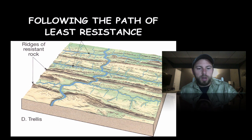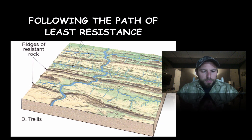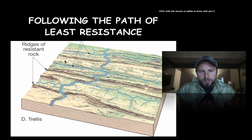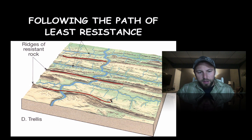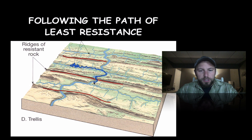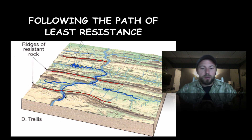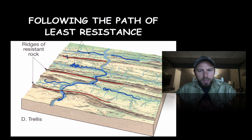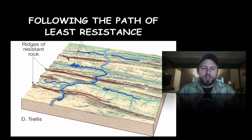Next up is the trellis pattern. Typically what we have here is a series of ridges — you can see a ridge here, here, and here. The water basically collects in those little valleys between the ridges, finds a weak point within that ridge, and kind of goes through. So it's relatively simple — the water pools in between ridges and then passes through weak points.